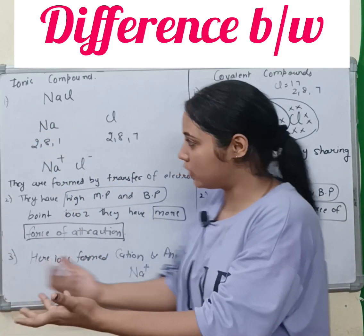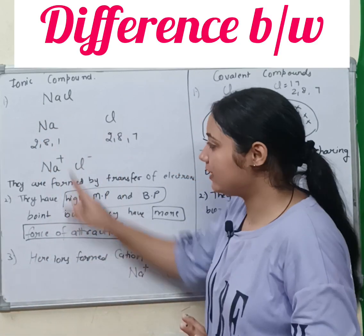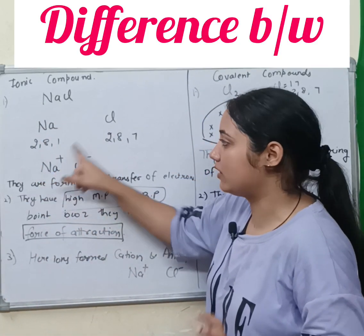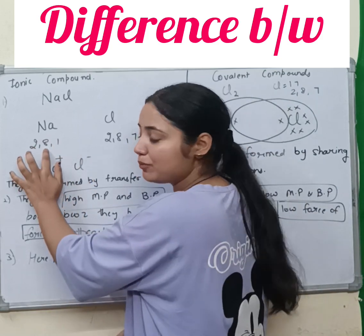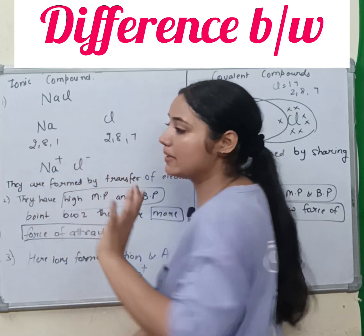Ionic means ions form. Sodium, atomic number 11, has electronic configuration 2-8-1. It has 1 electron in its outer shell — it will not lose 8 electrons — so it loses 1 electron and becomes Na⁺.